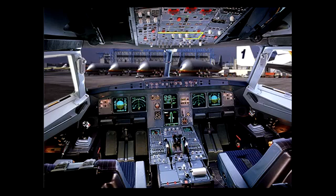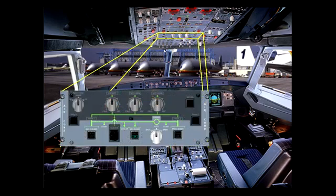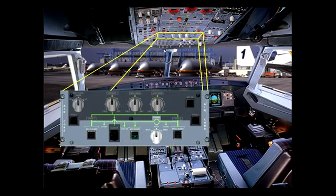Controls for the pneumatic system are part of the air conditioning panel located on the overhead panel. Again, we have shaded those controls which belong to the air conditioning chapter.